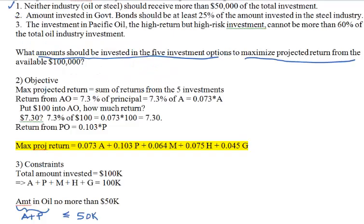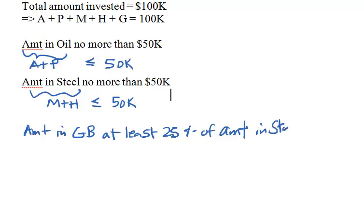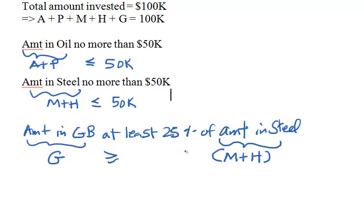The second guideline says the amount invested in government bonds should be at least 25% of the amount in the steel industry. Translating this into a constraint: G ≥ 0.25 × (M + H), where G is the amount in government bonds and M + H is the steel industry total.